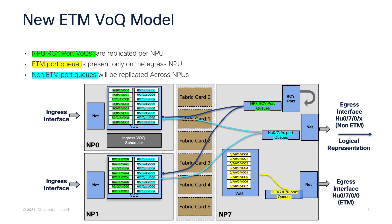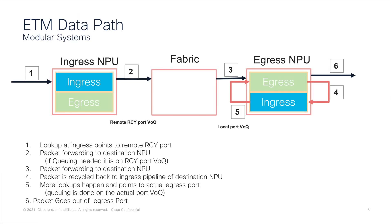Now let's take a look at the new ETM VoQ model. VoQ replication with this new ETM mode can be of two types. For a non-ETM port — where I have not enabled this function — it will follow the traditional VoQ replication, meaning all VoQs for those ports will be replicated across the system in different NPUs. For an ETM-enabled port, I won't have VoQ replication on foreign NPUs; those VoQs will be present only at the local NPU. The NPU recycle ports will be replicated across NPUs to help in recycling traffic back for the ETM-enabled port.